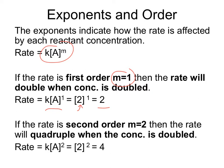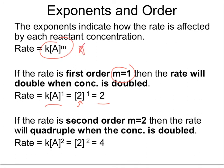If I find experimentally that my order M is equal to 2, when I plug in my concentration values, I'm not going to get a doubling anymore — at that point I'm going to get a quadrupling. If I start with a concentration of A equal to 1 and double that concentration, my reaction rate is going to quadruple. So this exponent indicates how the concentration of the reactant is going to affect the overall rate of the reaction.